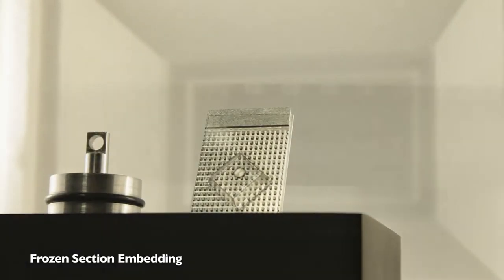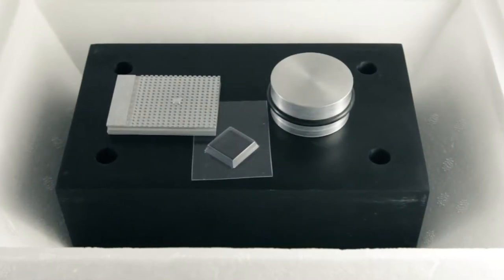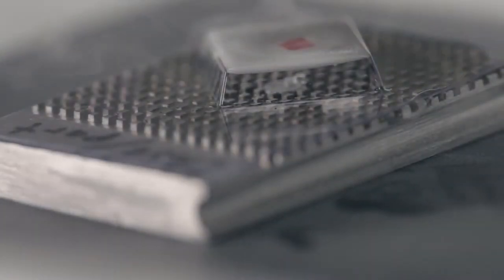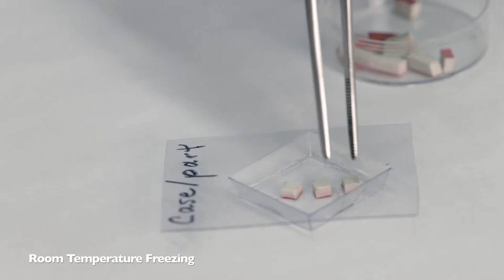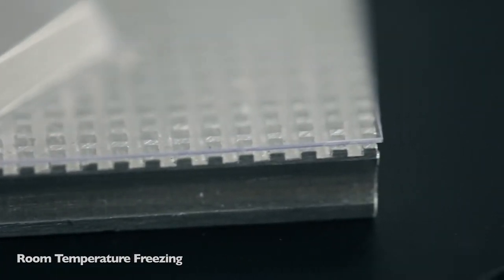The CryoCaddy frozen section embedding system is ideally suited for small biopsy material and resection margins. This system allows tissue to be oriented at room temperature on a flat surface which is parallel to the cutting plane of the microtome.